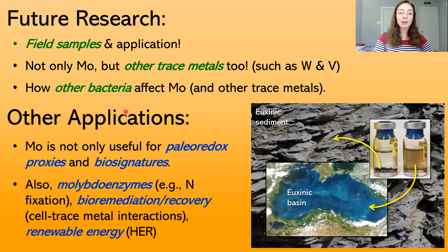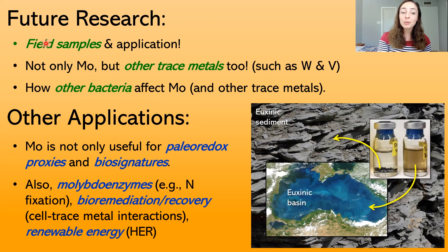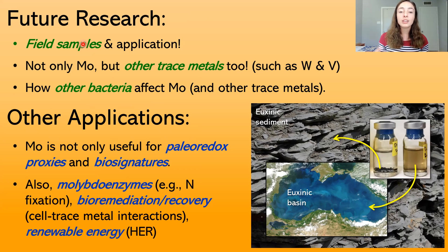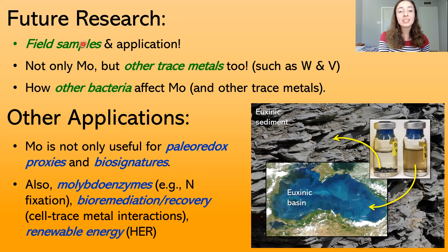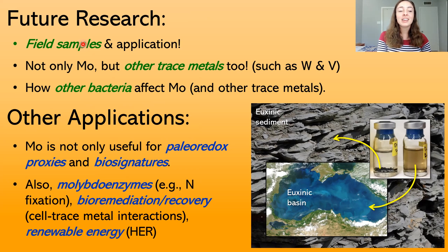Lastly, I want to discuss next steps after my lab-based research. The obvious next step is field-based research. After I fully investigate whether molybdenum species change systematically depending on different euxinic conditions — which we're already seeing they do — we can analyze field samples to see similarities and differences and what mechanisms are playing a role in both modern euxinic environments, by analyzing modern sediment, and ancient euxinic environments, by analyzing ancient sediment.